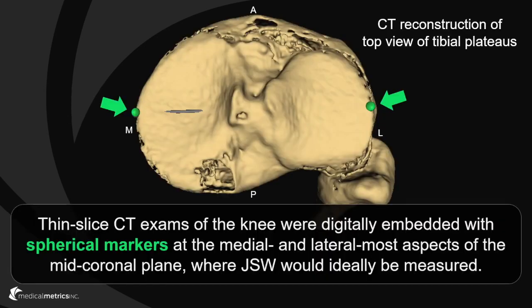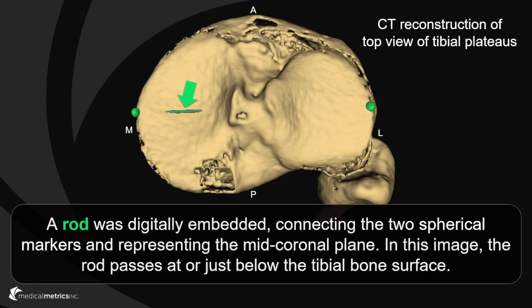This is a view looking down on the tibia plateau of a right knee. Thin slice computed tomography exams of the knee were digitally embedded with spherical markers at the medial and lateral most aspects of the mid-coronal plane of the tibia. This is where joint space width would ideally be measured. A rod was digitally embedded connecting the two spherical markers and representing the mid-coronal plane.